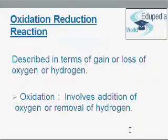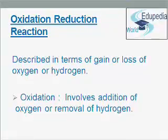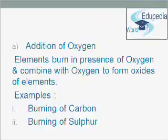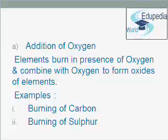Now we will discuss oxidation-reduction reactions. Oxidation-reduction reactions can be described in terms of gain or loss of oxygen or hydrogen. Oxidation is a process which involves addition of oxygen or removal of hydrogen. Elements burn in the presence of oxygen and combine with oxygen to form oxides. Examples are burning of sulfur and burning of carbon.